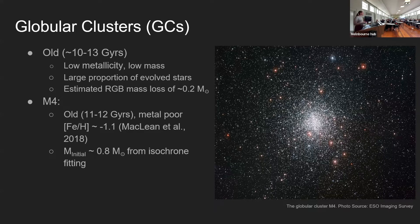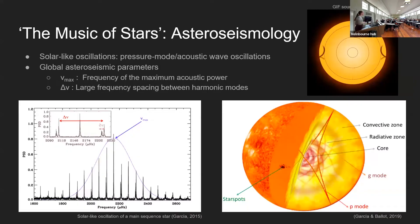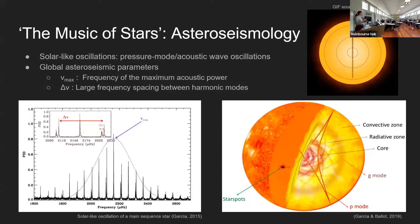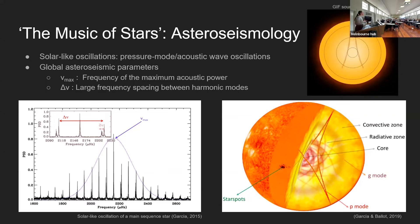One of the best ways to estimate accurate masses is using asteroseismology. Asteroseismology is the detection of waves that propagate within a star. I was looking at solar-like oscillations, which are pressure mode or acoustic waves that oscillate in the convective envelopes of stars. We measure these solar-like oscillations from the power spectra of either spectroscopic or photometric light curves, and they appear as comb-like Gaussian shaped structures. I show an example of a solar-like oscillation for a main sequence star in the bottom left plot.